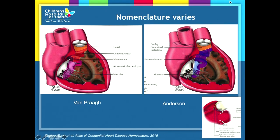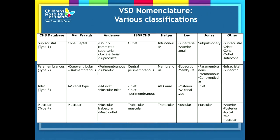Van Praag and Anderson have slightly different terminology for basically the same lesions. What one calls a conal VSD, the other calls doubly committed, et cetera. There is some contrast in terms of nomenclature that hasn't really been settled. If you look at a table of different classification types, you can find so many different ways to name these four types of VSDs.